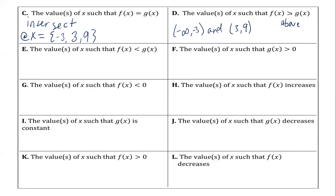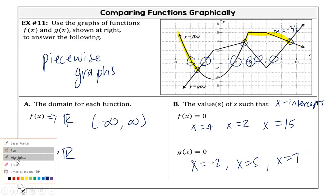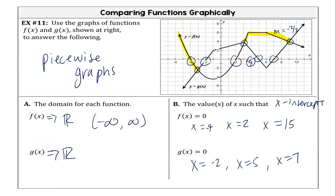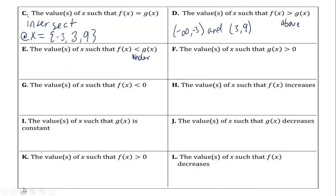If it said equal underneath, you would put a bracket, but because it doesn't say equal, we don't need a bracket. So if greater than means above, what does less than mean? Under — when is f of x under g of x? We have negative three to three, and then nine to infinity and beyond.